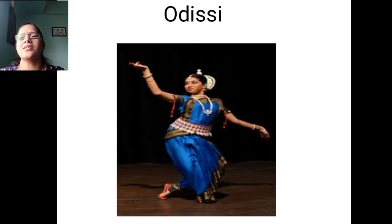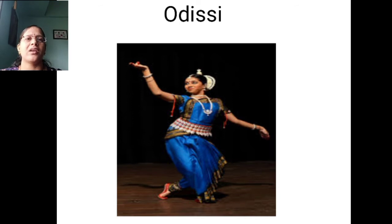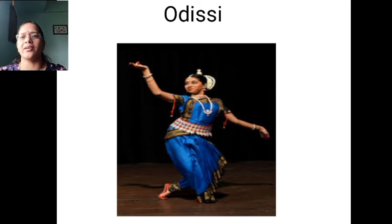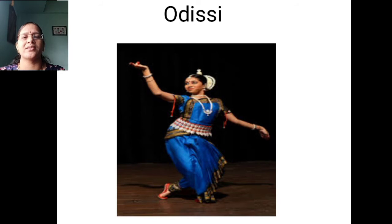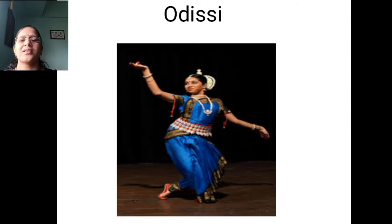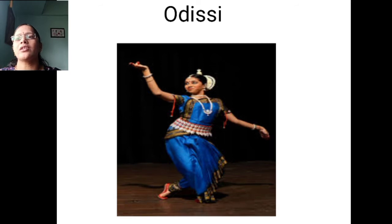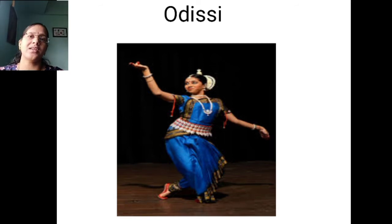Dancers wear a sari with bright color and in silk material, and it is worn with pleats — you can see pleats on the sarees. And Sujata Mohapatra is a famous Odissi dancer.